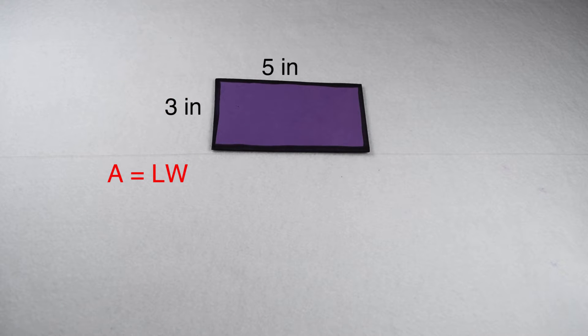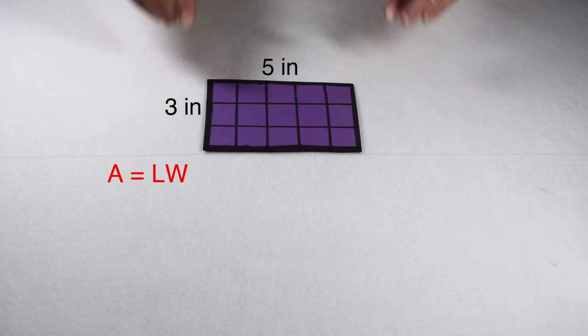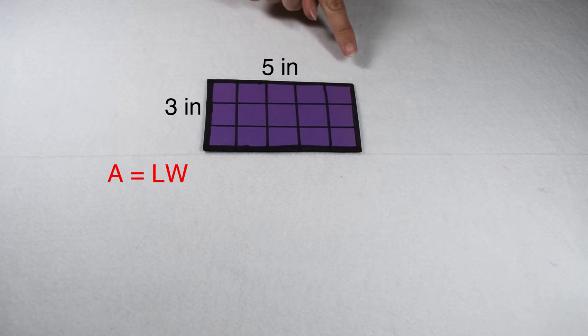To start by finding the area, we're going to break our rectangle up into squares worth 1 inch each. This means I would have 5 squares across and 3 squares going down.